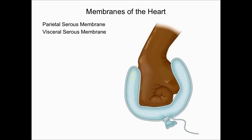Between the parietal serous membrane and the visceral serous membrane is the third part, called the serous cavity. A cavity is simply a space — in this case, a space between the parietal and visceral membranes. Within this cavity you'll find the fourth part, called serous fluid. Serous fluid serves two functions: it is a shock absorber, and it helps reduce friction between organs.